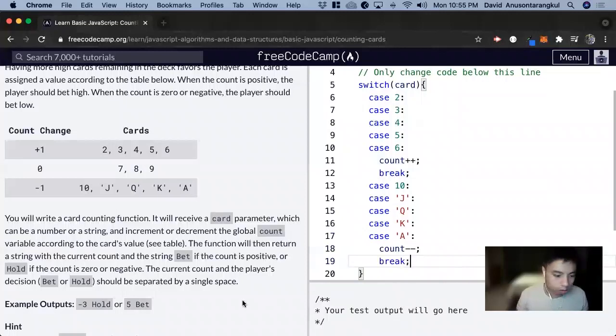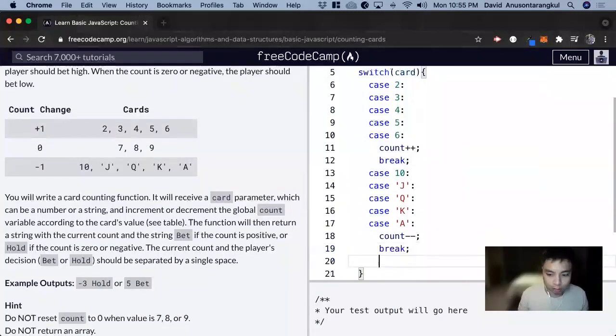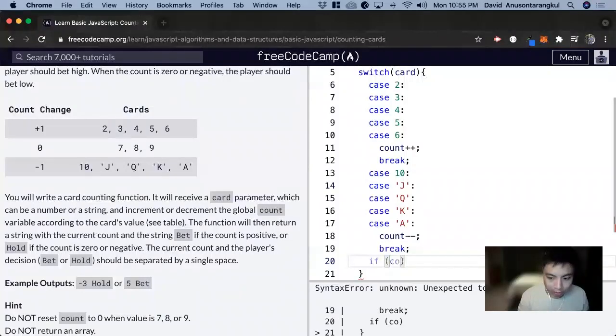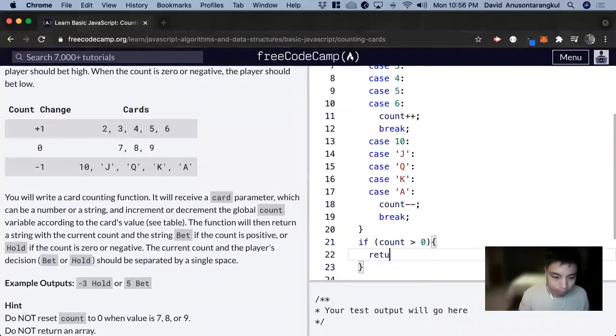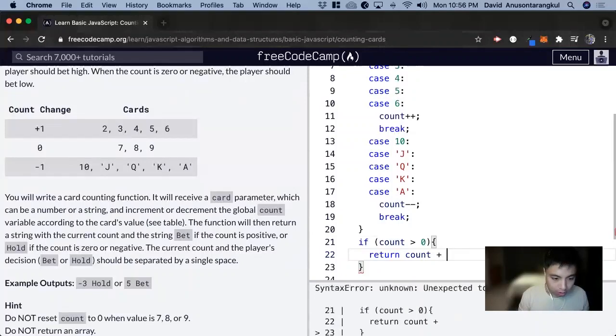And lastly, we can use an if else for the last part. So if count is positive, and this needs to be outside of the switch. If count is greater than 0, we return the count plus the string space bet.